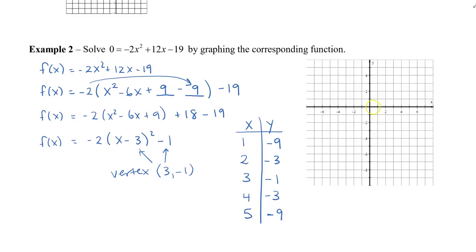So I'm going to plot my 5 points. So I get 1 negative 9. 2 negative 3. 3 negative 1. 4 negative 3. And 5 negative 9. So I'm going to connect my 5 points. And I know it opens down because there is a negative in the front of the first coefficient.